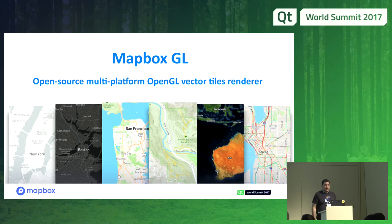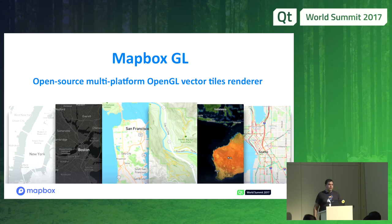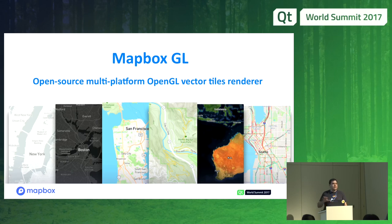We use OpenGL to render everything. Once we get the vector data, we generate buckets and push them through shaders — different shaders for each type of rendering. Not only vector data, because for satellite imagery we're still dealing with raster images. Sometimes you have a hybrid of satellite imagery below with vector data on top to show roads and map items. Shown below are just examples of the range of styles that Mapbox provides — these are the default templates, but everything is highly customizable for designers and cartographers.